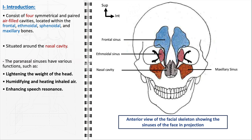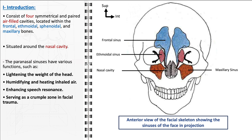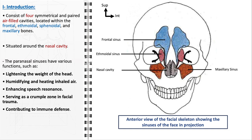From a protective standpoint, the paranasal sinuses serve as a crumple zone in the event of facial trauma. They absorb and distribute the impact force, thereby reducing potential damage to more critical areas such as the brain. Lastly, the paranasal sinuses contribute to immune defense — they are lined with mucous membranes that produce mucus, trapping and eliminating pathogens and debris. This function is part of the body's first line of defense against airborne contaminants and plays a crucial role in maintaining respiratory health.